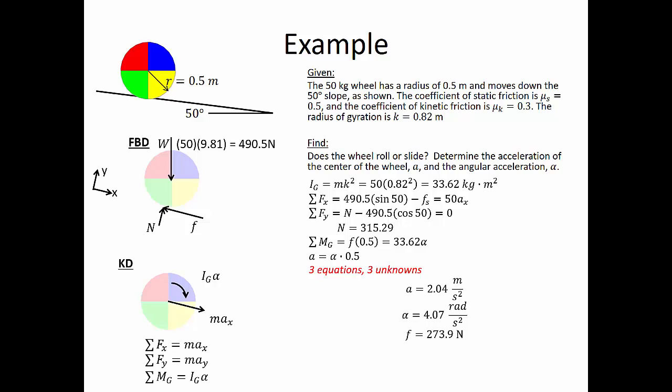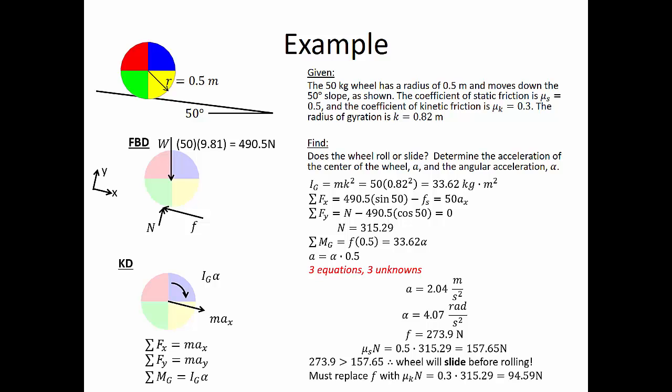Now it's tempting to say the problem is finished because we have an acceleration, an angular acceleration, and a friction, but we need to check our assumption. We assumed the wheel was going to roll. The maximum static friction is our coefficient of static friction, 0.5, times our normal force, 315.29, which equals 157.65 newtons. Since 273.9 is greater than 157.65, the wheel is going to slide before it rolls. We have to replace our friction with kinetic friction — coefficient of kinetic friction times the normal force — which in this case is 94.59 newtons.